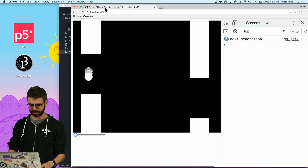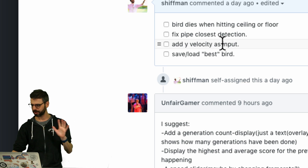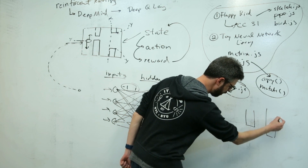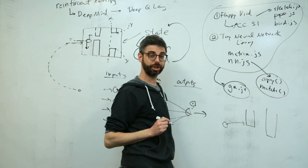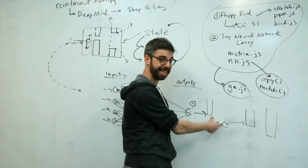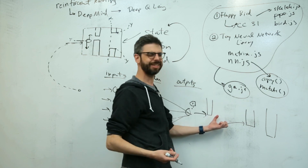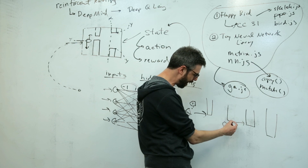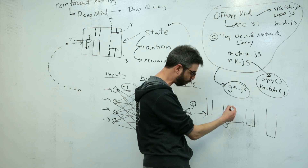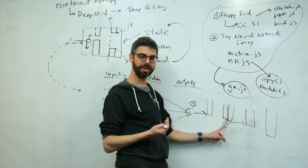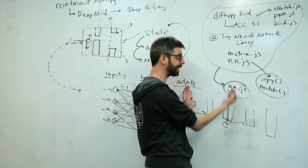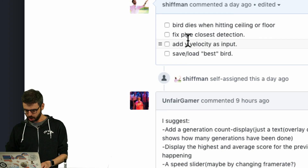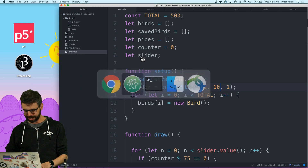The next feature is fixing the closest pipe detection. If this is the bird and this is the pipe, and there's another pipe behind, my algorithm says to look at the one in front. But as soon as the front of the pipe passes the bird, it ignores that pipe — it should really still consider it until the back of the pipe passes. I think this is going to be an easy fix.